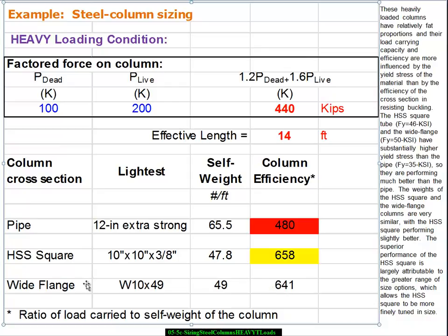Those columns are the ones that are working better generally because we're in a fat regime and yield stress is the primary material property that's affecting things.